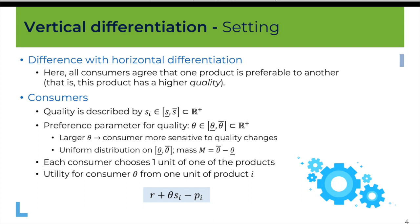I'm going to walk you through a particular model. We will not go through all the details here. The main message is that there is a lot of similarity between horizontal and vertical differentiation when it comes to analyzing these two-stage games where firms choose first how much they want to differentiate and then they choose the price.